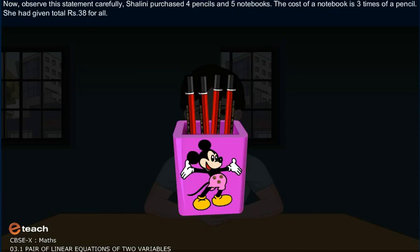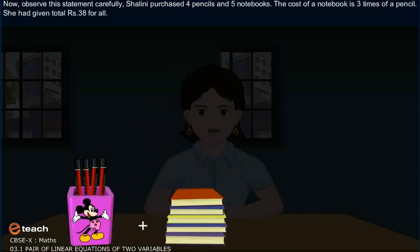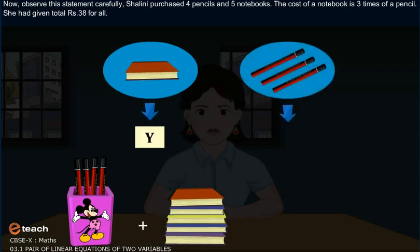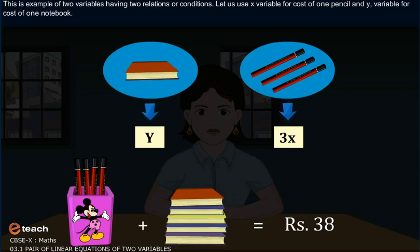Now, observe this statement carefully. Shalini purchased four pencils and five notebooks. The cost of a notebook is three times of a pencil. She had given total rupees 38 for all. This is example of two variables having two relations or conditions.